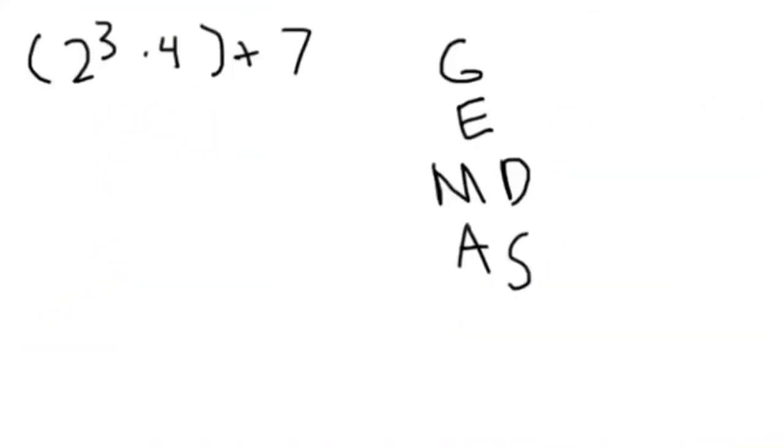For example, for the problem quantity 2 cubed times 4, close quantity, plus 7, you have to follow the order of operations, otherwise known as GEMDAS.